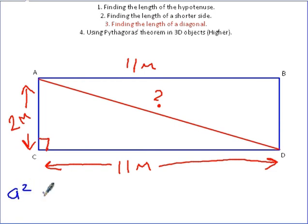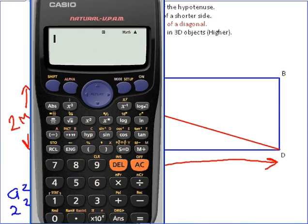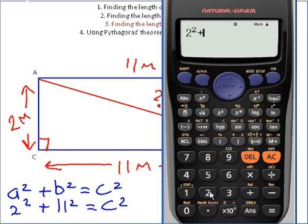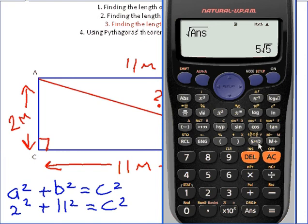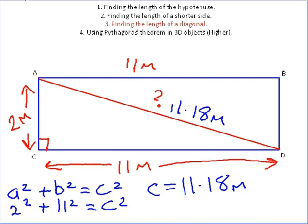A squared plus B squared equals C squared. So 2 squared plus 11 squared equals C squared. 2 squared plus 11 squared equals 125. Square root the answer — that gives 5 root 5. We don't want that form, so we click the SD button to get a decimal. C equals 11.18 — you can see the 0 isn't going to change the 8. So 11.18 metres. Finding the diagonal is really the same as before, just presented in a different format — it's just Pythagoras' Theorem.